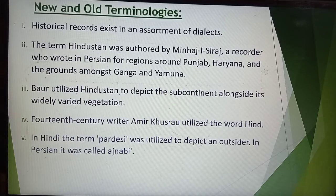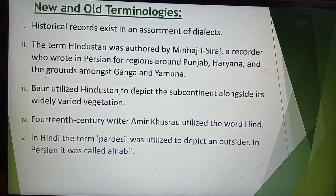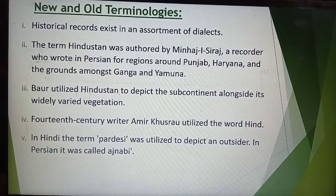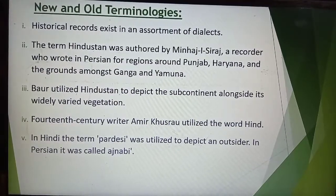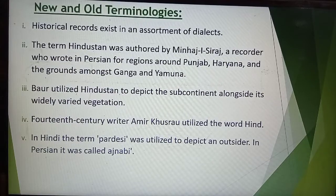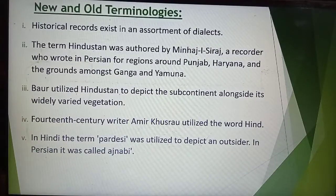The term 'Hindustan' was first used by Minhaj Siraj, a recorder who wrote in Persian for the regions around Punjab, Haryana, and the lands between the Ganga and Yamuna. According to him, Hindustan constituted those areas and was used in a political sense for lands forming parts of the dominions of the Delhi Sultanate. South India was not included — the area where the Delhi Sultan ruled was called Hindustan.